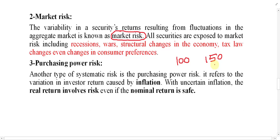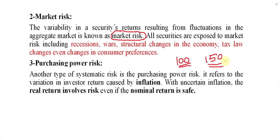Why has the purchasing power of money decreased? Because last year 100 Afghani could purchase 1 kg of apple, but this year 100 Afghani cannot — you have to pay 150 to purchase 1 kg of apple. Purchasing power risk means the possibility of reducing the value of money in the market. The purchasing power risk is because of inflation, which is sometimes also called inflation risk.